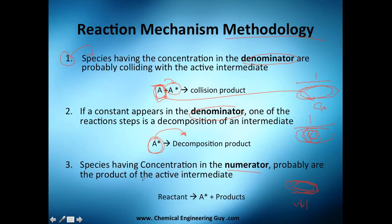So it's straightforward: A goes down in the denominator indicating a collision or decomposition step, and the numerator in general corresponds to the product.